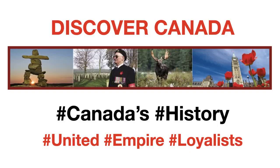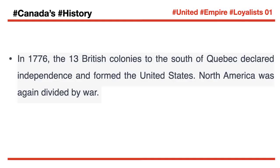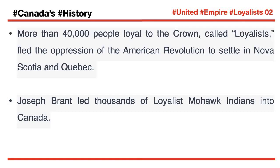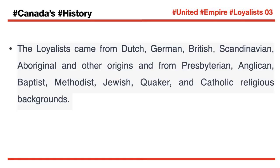In 1776, the thirteen British colonies to the south of Quebec declared independence and formed the United States. North America was again divided by war. More than 40,000 people loyal to the Crown, called Loyalists, fled the oppression of the American Revolution to settle in Nova Scotia and Quebec. Joseph Brant led thousands of Loyalist Mohawk Indians into Canada. The Loyalists came from Dutch, German, British, and Scandinavian origins.